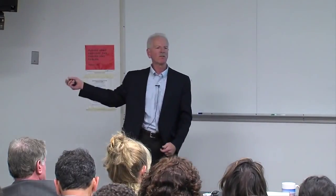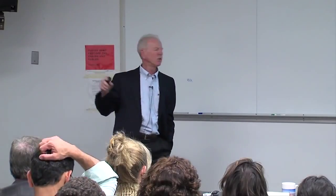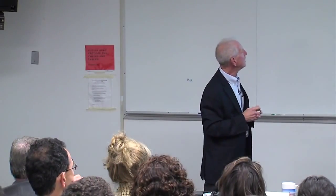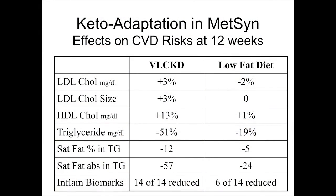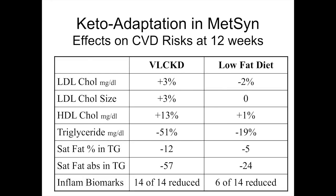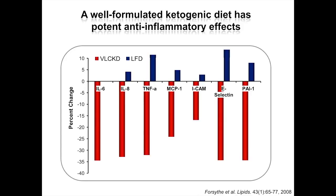We measured inflammatory biomarkers — not just CRP or IL-6 alone, since none of those by themselves are clear markers, so we measured a panel of 14 of them. On the VLCKD, 14 out of 14 were reduced. On the high-carb low-fat diet, only 6 out of 14 were reduced. Remarkably, seven inflammatory markers — including IL-6, IL-8, TNF-alpha, and PAI-1 — showed highly significant reductions on the low-carb diet, dramatically different from the similar-calorie low-fat high-carb diet. We've seen this in two other studies as well — this is not an isolated observation. A well-formulated low-carb ketogenic diet can be profoundly anti-inflammatory.